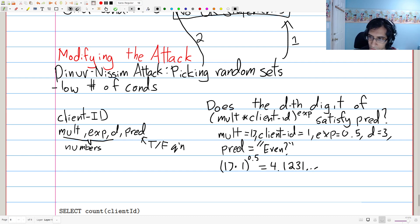So let's do an example. So suppose mult equals 17. Client ID equals one. Exp equals 0.5. D is equal to three. And pred is equal to the following question asking, is the digit even? Okay. So in this instance, let's try to see what this is. So we're going to first compute mult times client ID to the exp. So that means we take 17 times one to the 0.5. This is equal to 4.1231 dot, dot, dot. Now what we're going to do is take a look at the third digit. So one, two, three. And we're going to see, is it even or not? And we can see that it is even. So the answer to this query would be yes. So just to repeat, if the query you do is specified by these parameters and it's run on client ID equal to one, then the answer will be yes. And it will be included in the set.